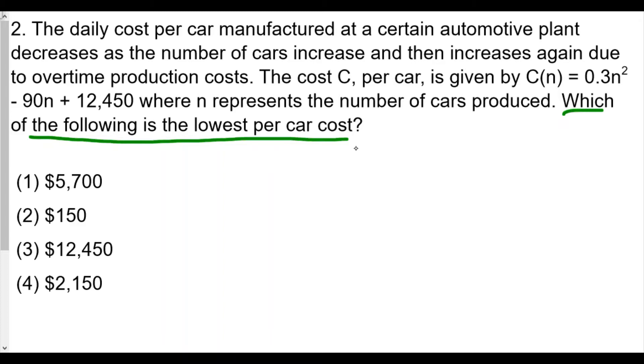Since the question is asking for the cost, we need to find the matching y-value. Our a-value is 0.3, our b-value is -90, and our c-value is 12,450. We use the axis of symmetry: n = -b/(2a) = -(-90)/(2×0.3) = 90/0.6. When we calculate this, 90 divided by 0.6, we get 150.